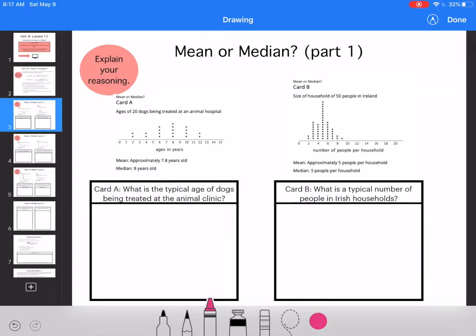What is the typical age of dogs being treated in the animal clinic? The mean is approximately 7.8 years old. The median is eight years old. What is the typical age? That would be the average age. So I'm going to say the mean 7.8. This includes all the ages of the dogs, including those outliers.